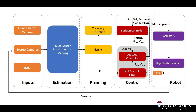The estimation module takes in raw sensing data and performs visual inertial odometry and mapping. The planning module takes in the map and the waypoints sent from the ground station and outputs a collision-free trajectory. Due to the limited sensing range, we replan the trajectory at a constant frequency to account for recently observed obstacles in the map.